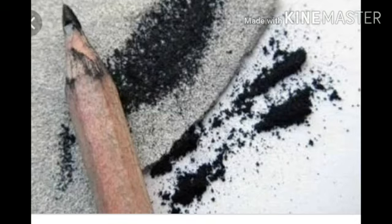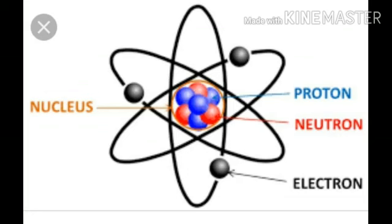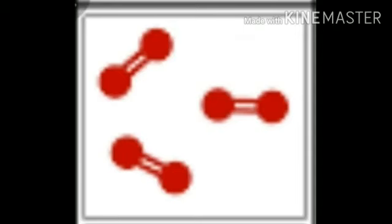If we break that carbon atom apart, then it will no longer exhibit the properties of carbon. The smallest unit of an element that exhibits the properties of the element is called an atom. So an atom is the smallest particle of an element.